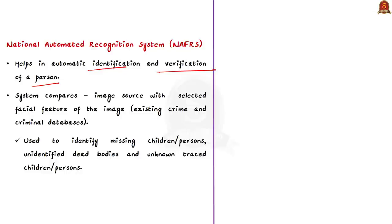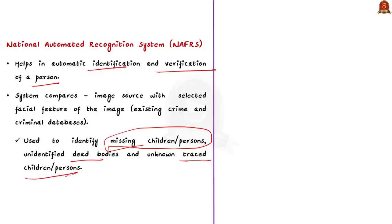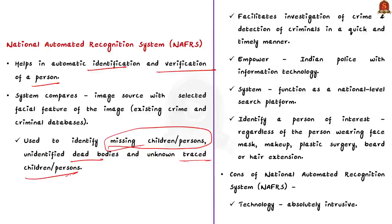The system works like comparison software — you already have a database with many images, and when you provide an image, it compares it to the images in the database. Many aspirants would have seen this type of software in Hollywood or Bollywood movies, where a terrorist's picture is fed in and the software identifies the person. This software can be used to identify criminals, solve crimes, identify missing children, identify dead bodies, and trace missing persons.